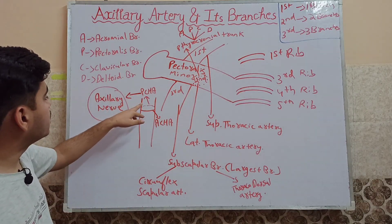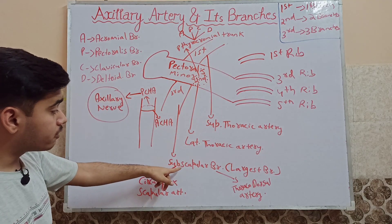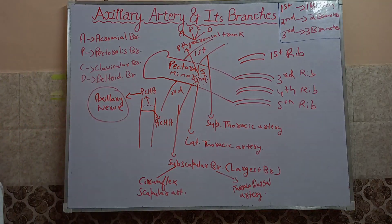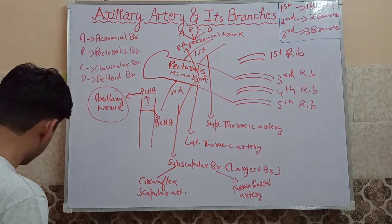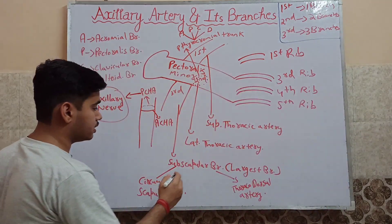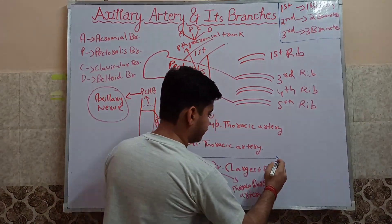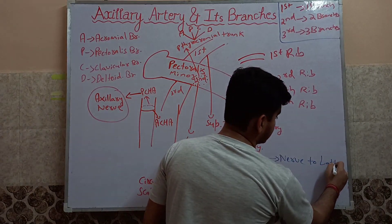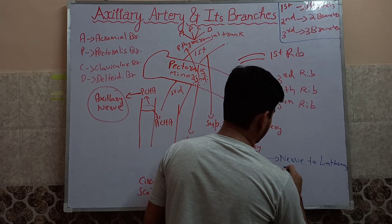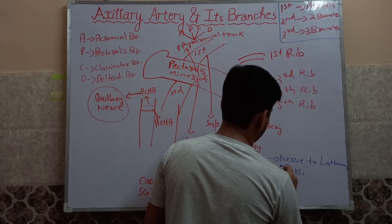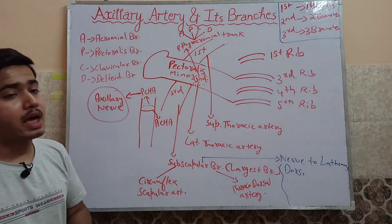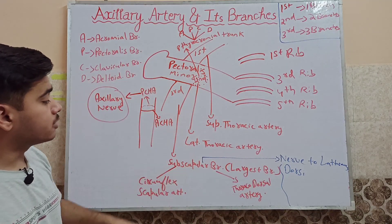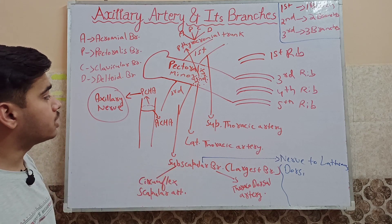One more clinical point: the nerve running along the subscapular artery is the nerve to latissimus dorsi. As you know, the latissimus dorsi is the major muscle of the back, and this nerve runs along with the subscapular artery.